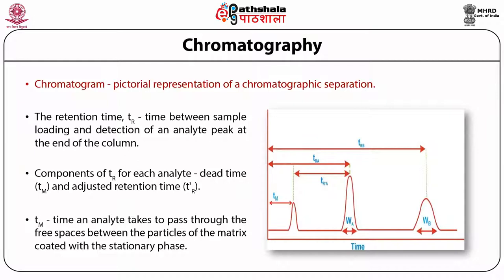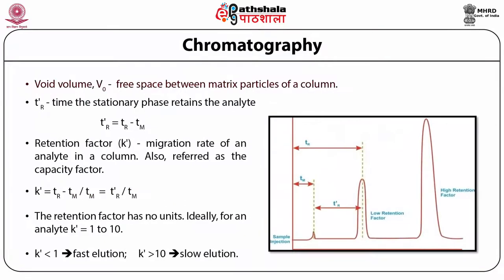A chromatogram is the pictorial representation of chromatographic separation. The retention time tr is the time between sample loading and detection of an analyte peak at the end of the column. Each analyte may have a different retention time. The time taken for a mobile phase to pass through the column is called tm. The retention time tr has two components: dead time and adjusted retention time. The free space between matrix particles is called the void volume v0 of a column. The tm is measured as the time taken by an analyte which does not interact with the stationary phase to elute through the void volume, and its value will be the same for all analytes.